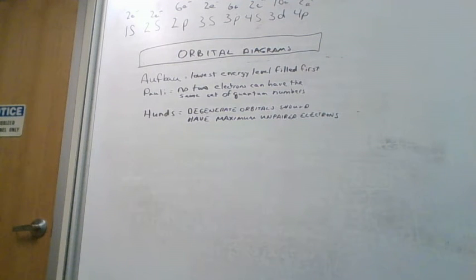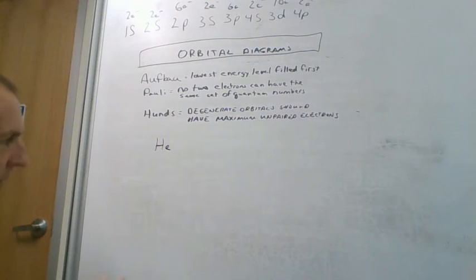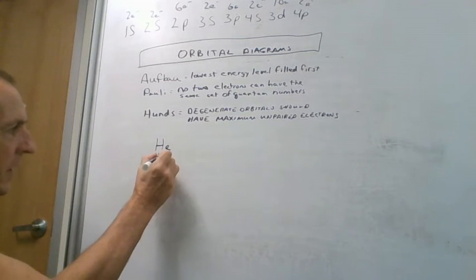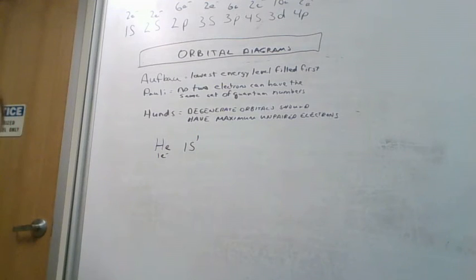We previously talked about how to do electron configurations. Remember that tells us how many electrons are in each energy level and subshell within that energy level. So for example, if we had helium which is atomic number one which has one electron, that electron is in the 1s, so we'd have 1s¹ as its electronic configuration.